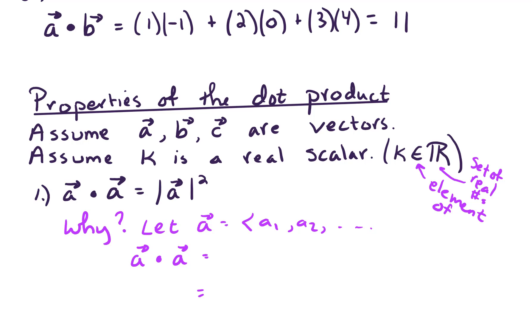Now you might be wondering why that's the case. So let's let a be a vector with n components. Okay, and if we do the dot product of a with itself, our first scalar multiplication is just going to be a1 times a1, and we're going to add that to a2 times a2, all the way up through a sub n times a sub n.